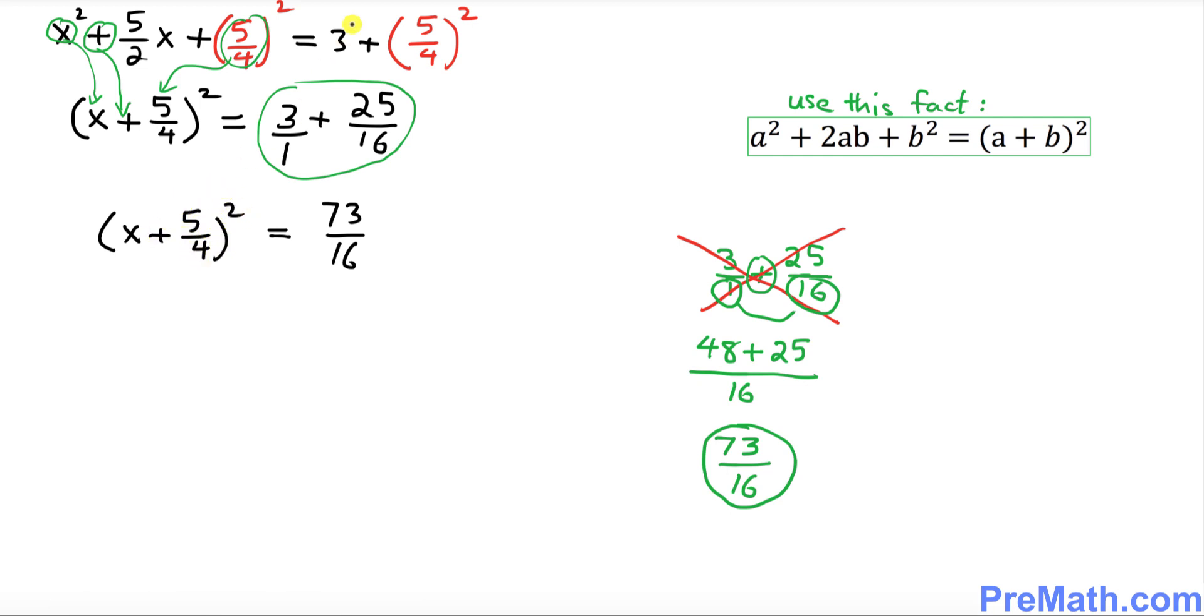Since we want to solve for x, we must get rid of this square by taking the square root on both sides. This square and square root undo each other. We got x + 5/4 = ±√73/√16, and the square root of 16 is 4.